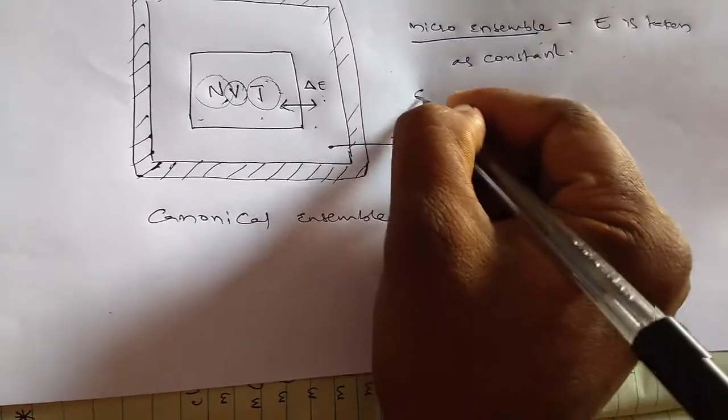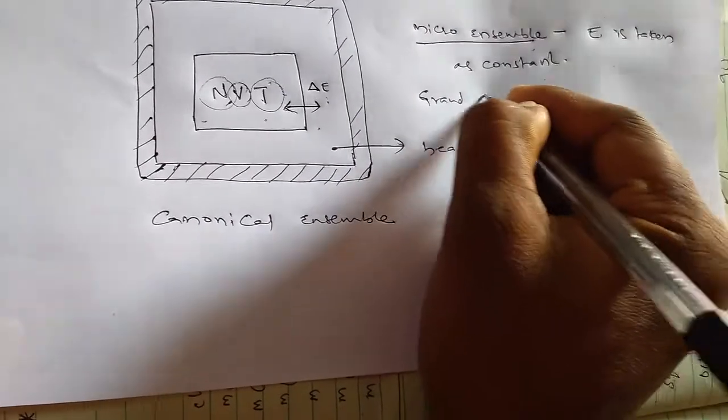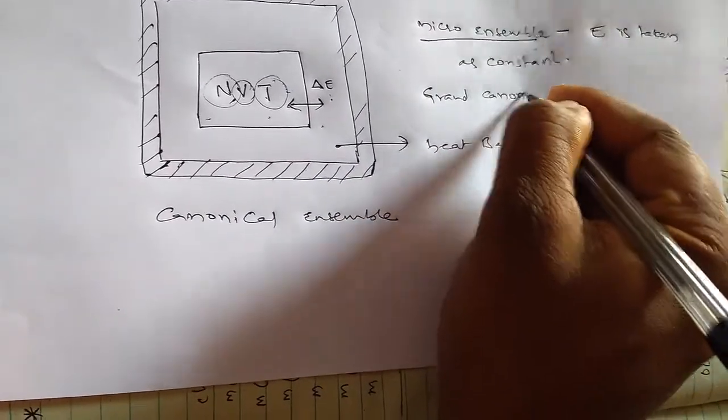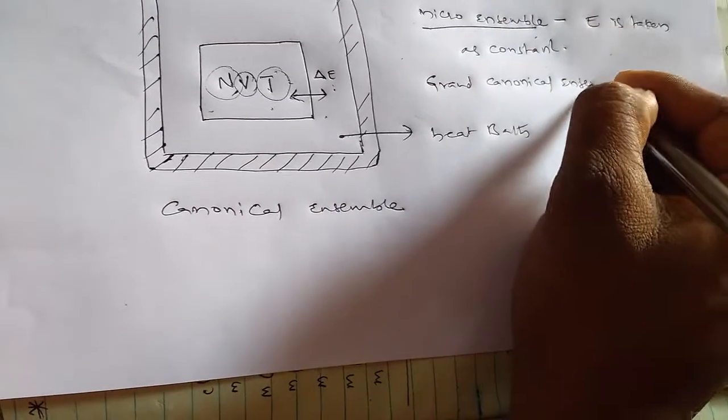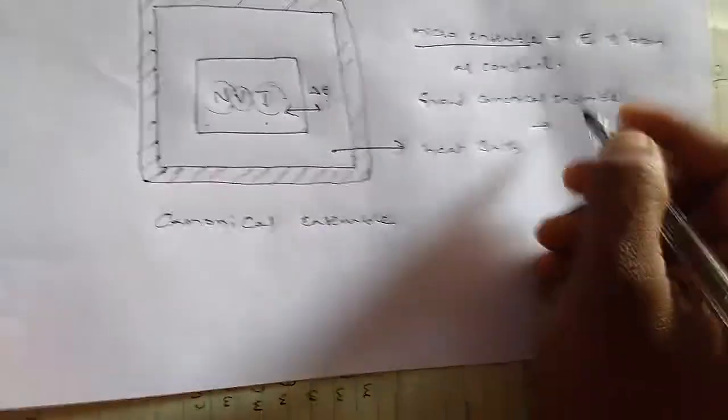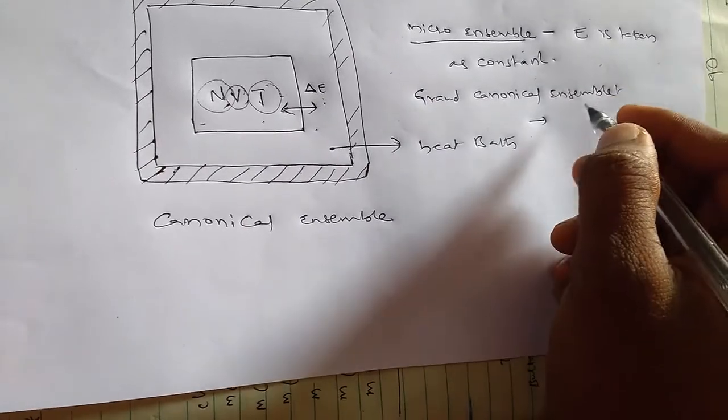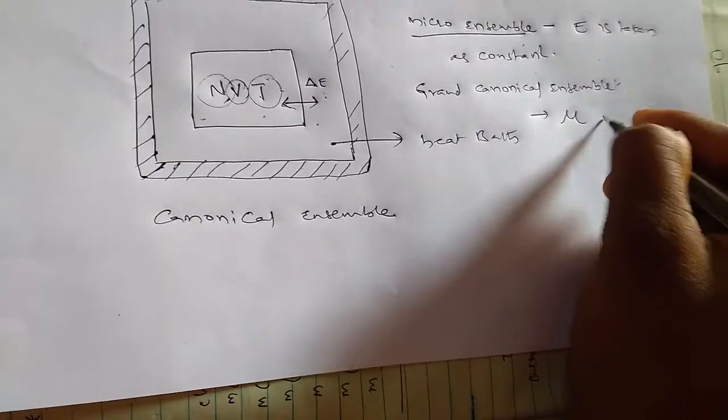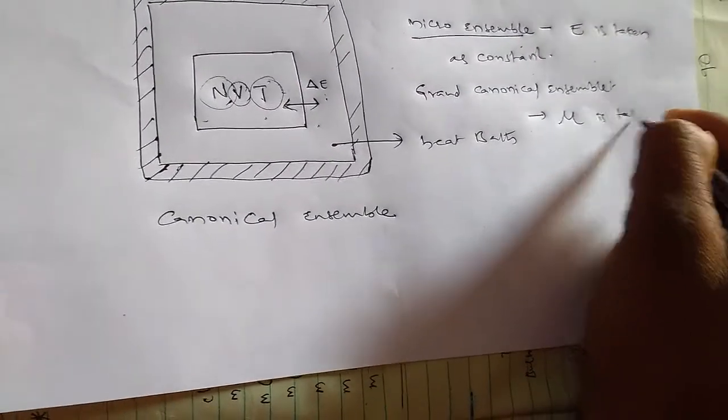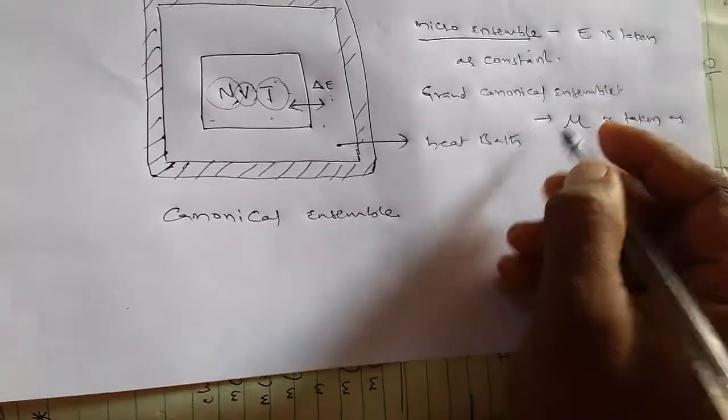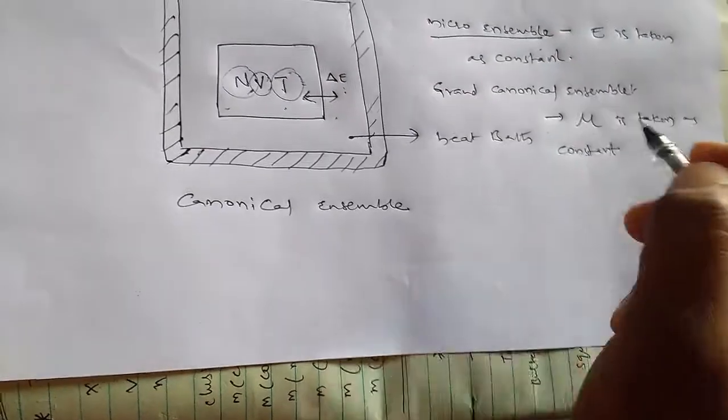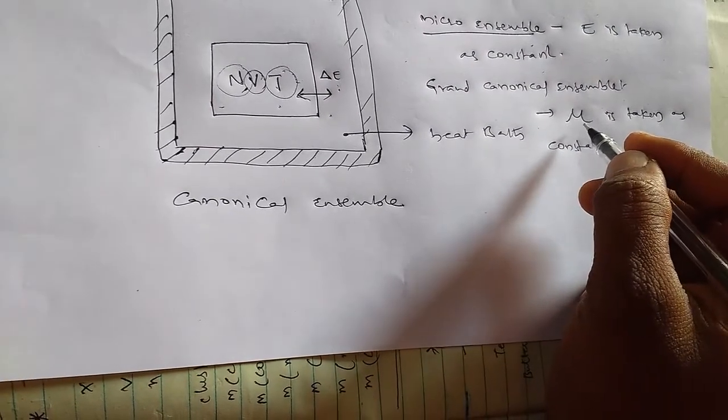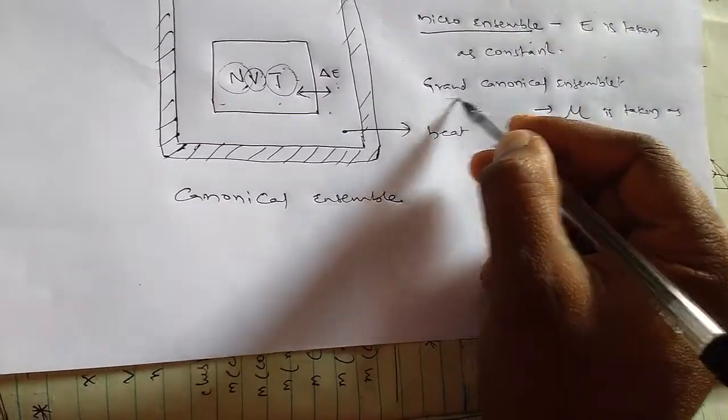In grand canonical ensemble, μ is taken as constant, means there is no change in chemical potential.